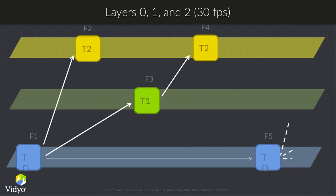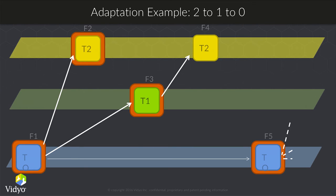Expanding to a third layer, we add two more packets. The dependency tree grows and an extra T2 layer gives you 30 frames per second. The router adapts by deciding which packets to drop on the fly — you can transition from 30 fps to 7.5 fps simply by dropping the T2 and T1 packets. It's very simple, does not require decoding, and all you have to do is look at the packet headers. This allows you to shape the stream into the bitrate available on your mobile endpoints.